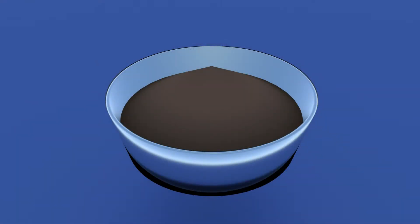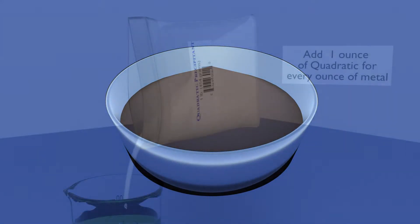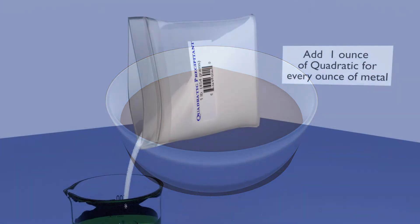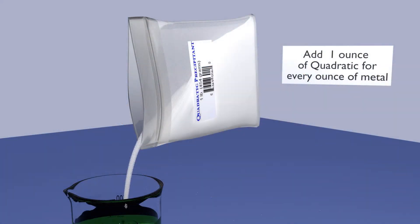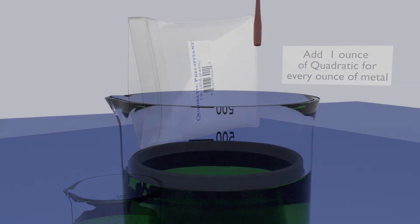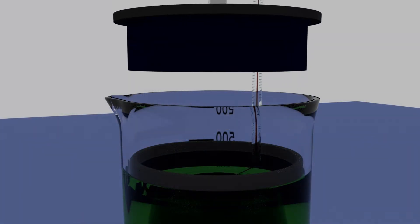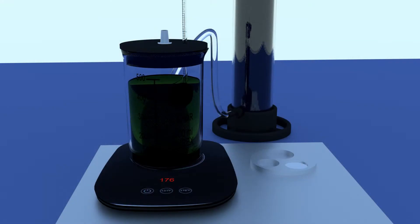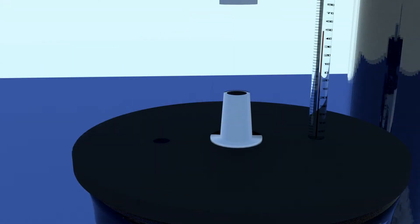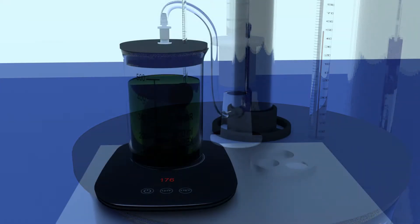We are ready now to convert the dissolved gold into gold particles. Add one ounce of quadratic for every ounce of dissolved metal. Replace the cap and bring the beaker back inside, reconnecting it to the scrubber.